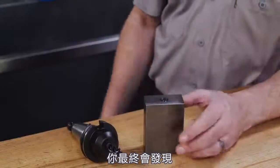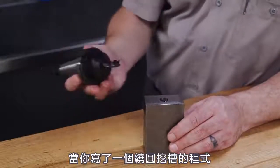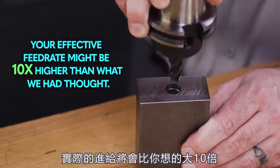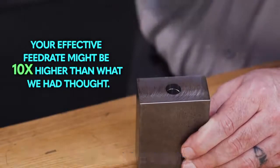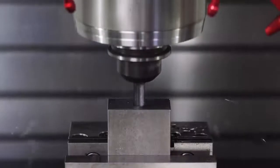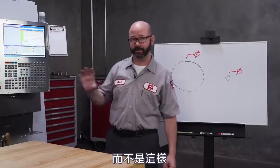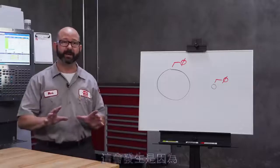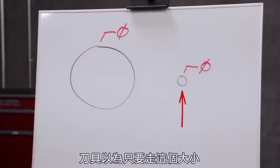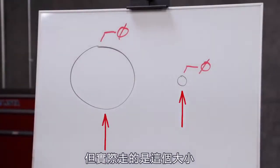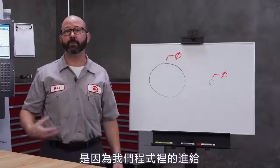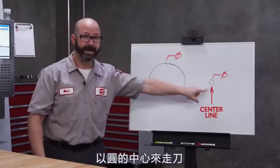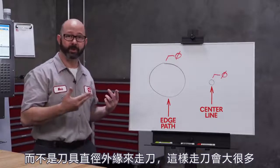What you will eventually find out is that when you program a circular pocket with a tool that is nearly the same size as the hole itself, your effective feed rate might be 10 times higher than what you had thought. This happens because our tool thinks that it's going this far when it's actually going this far — our program feed rates are based off the path the center line of the tool follows, and not the path that the edge of the tool follows, which is much larger.